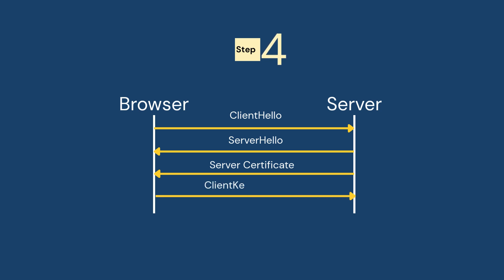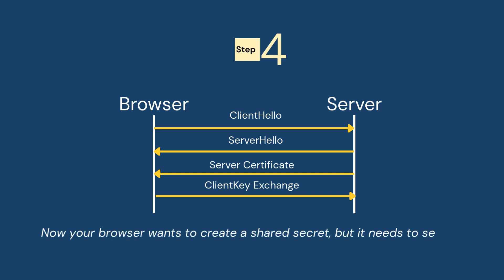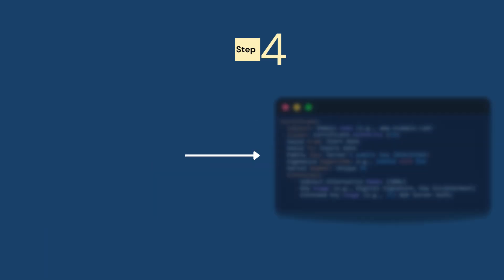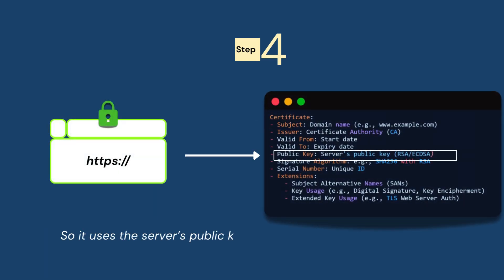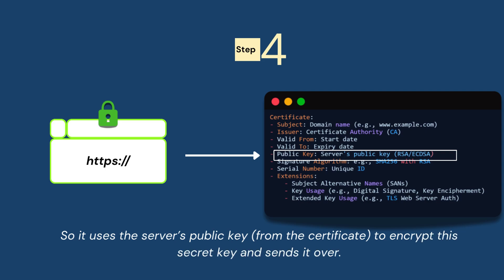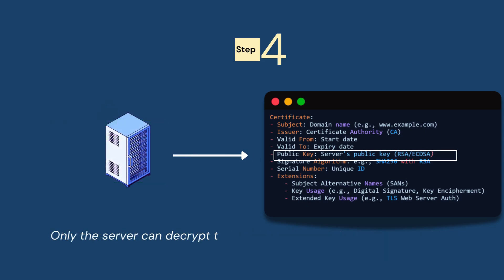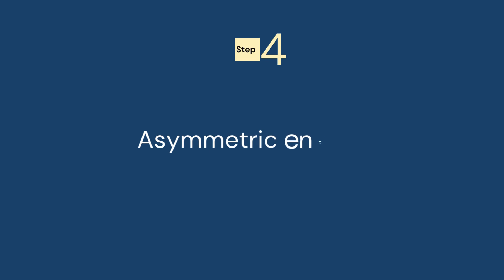Step number four: creating a secret key. Now your browser wants to create a shared secret, but it needs to send it securely. So it uses the server's public key from the certificate to encrypt this secret key and sends it over. Only the server can decrypt this because it has the matching private key. This is where asymmetric encryption is used.